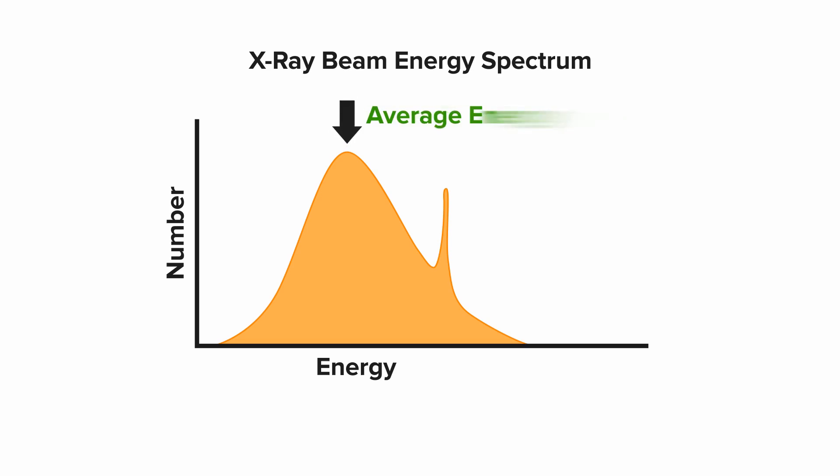So what's this graph telling us? The tallest part of the curve represents the average energy of the beam. The point of the curve that's farthest to the right represents the highest energy photons. There aren't very many really high energy photons, which is why the curve is so short there.